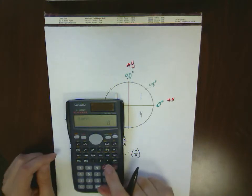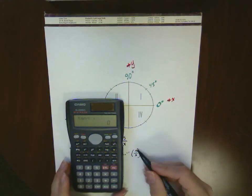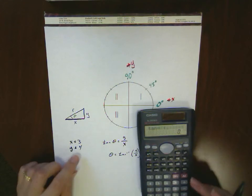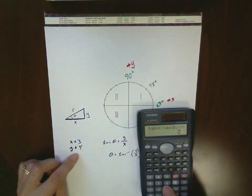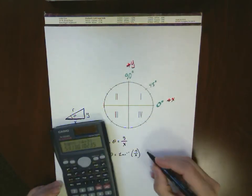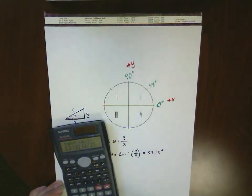So if I push my inverse tangent, and I need to use parentheses now, I put my value of y over my value of x. So for this particular problem, that's going to be 4 divided by 3. Close my parentheses, hit Enter. So that gives me a value of 53.13 degrees.